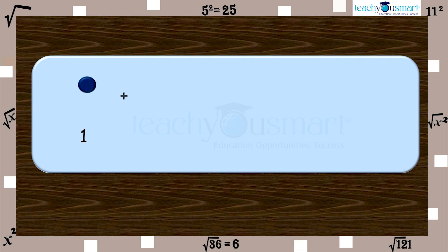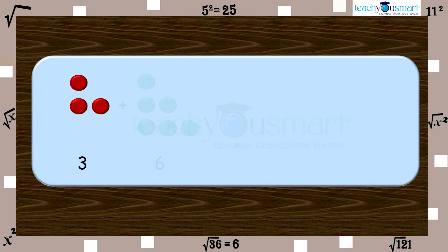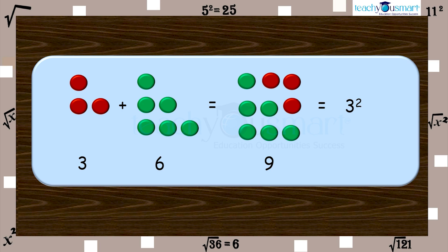Let's calculate the sum of two consecutive triangular numbers. Consider 1 and 3. 1 plus 3 equals 4, equals 2 square. Now, let's go for 3 and 6. 3 plus 6 equals 9, equals 3 square.